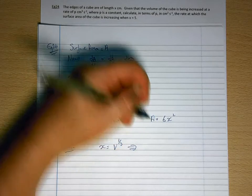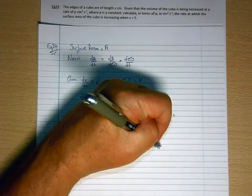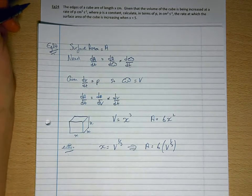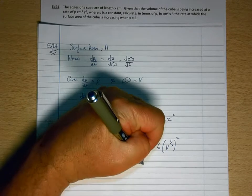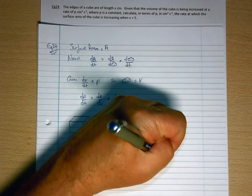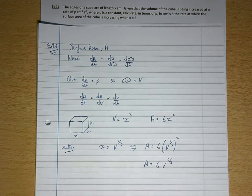So either x equals the cube root of V, which when I then substitute it into A will become 6, instead of x, V to the 1/3 squared, which is A equals 6V to the 2/3. Now I can differentiate that.